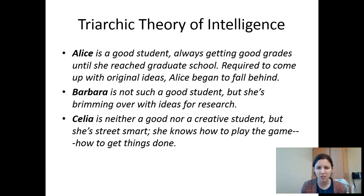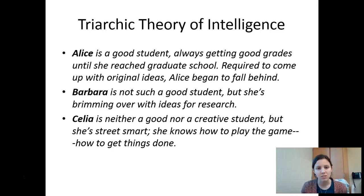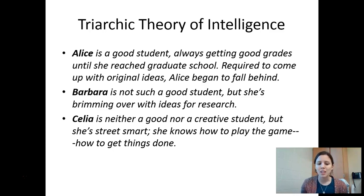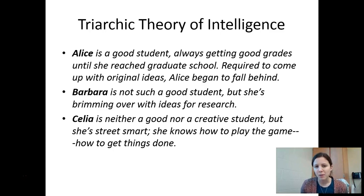That's really all the triarchic theory is — boiling down Gardner into three things rather than nine. Critics of this theory say that even though there are three different things — analytical, practical, and creative — there's still a G that overlaps them. So if someone's really creative, they tend to be analytical as well, or very practical as well.